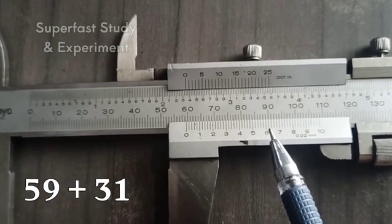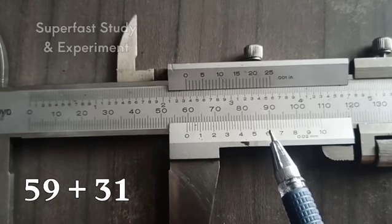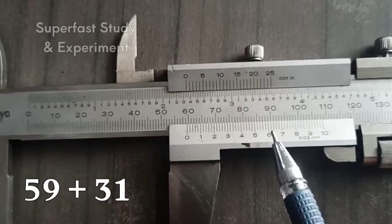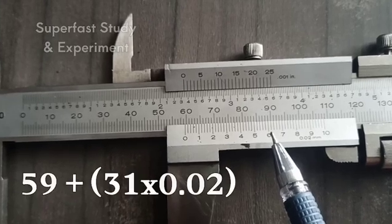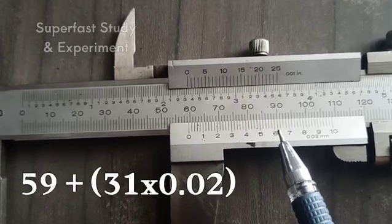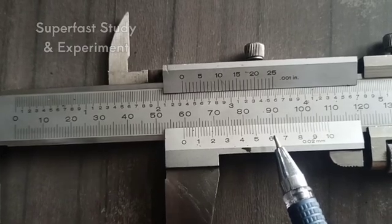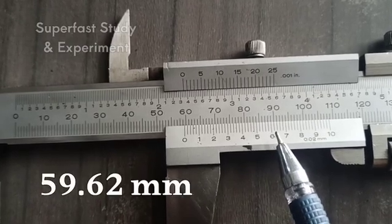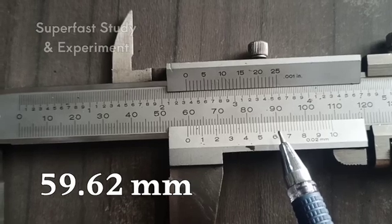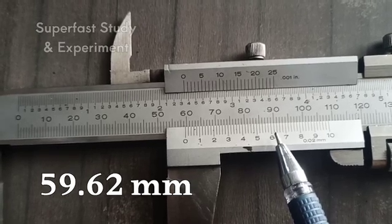Now we will write 31 here. 59 plus 31. Now we have to multiply 31 by the least count of the vernier which is 0.02 millimeters. So when we solve this, we will get the answer 59.62 millimeters. Similarly, I will tell you the readings further which will make it even more clear.